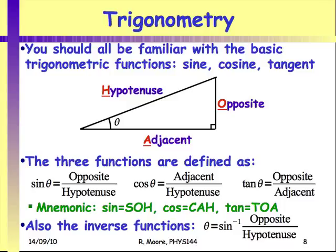These should all be very familiar. We're going to be using them a lot particularly when we get to vectors and resolving components. If the hypotenuse is your vector, then the x and y components are the sides of the triangle, and you can calculate those sides given the magnitude of the vector and an angle theta. That's one of the essential things we do a lot in this course.